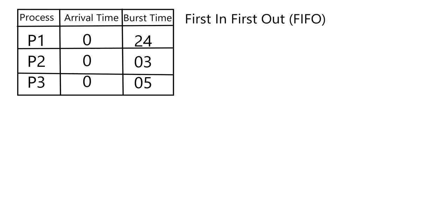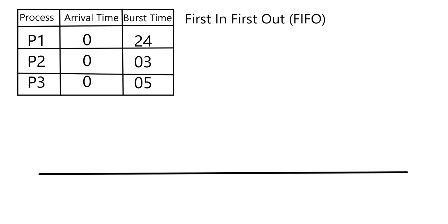To make a Gantt chart we start by drawing a horizontal straight line. Since all three processes have arrived at the same time — at point zero — we'll be scheduling them on a first come first serve basis. In this example it doesn't matter much, but we'll take another example later where there will be different arrival times for each process. So at time zero, P1 starts its execution.